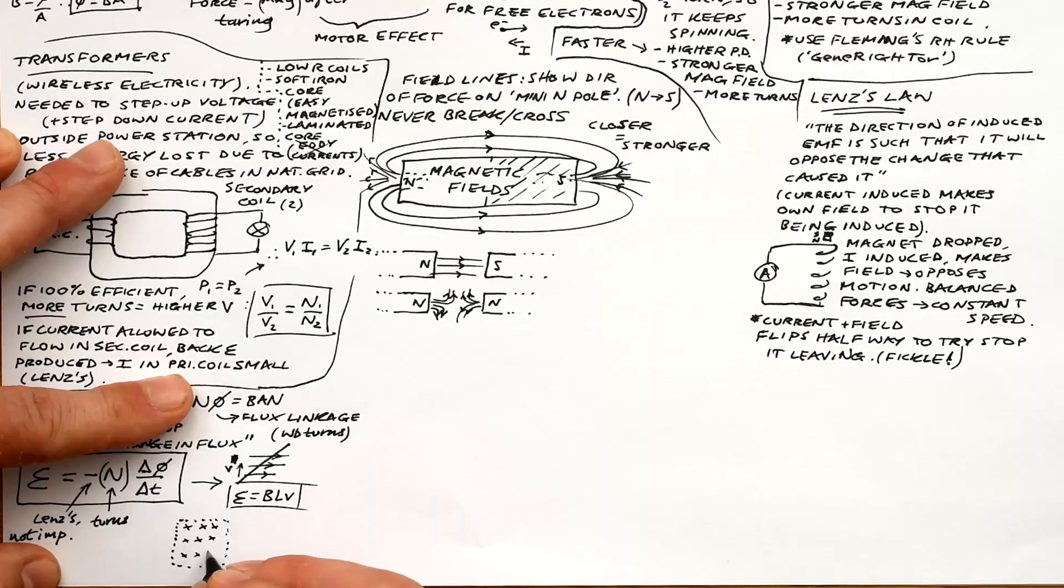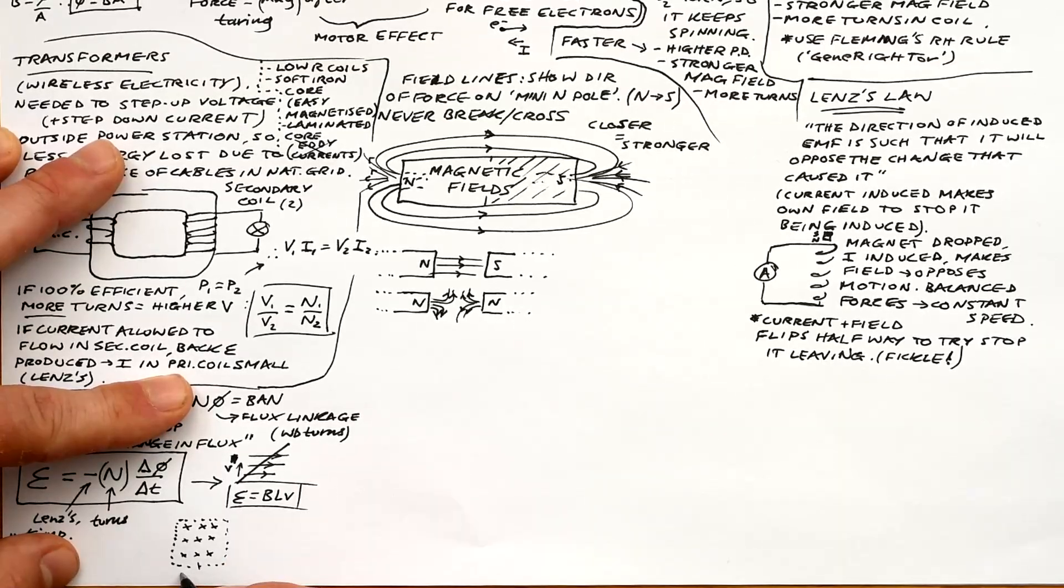That gives you the total amount of flux that's being captured by a coil. So the unit is not just Webers, it's Weber turns.